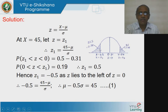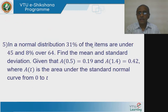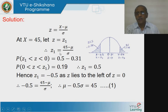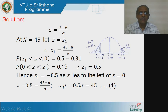31% under 45 means to the left of x = 45. So 31% are under 45, to the left of x = 45. Similarly, 8% are over 64, meaning this area is to the right of x = 64. Now we have to calculate μ and σ. Let z = z1 at x = 45, so therefore z1 = (45 - μ) / σ.